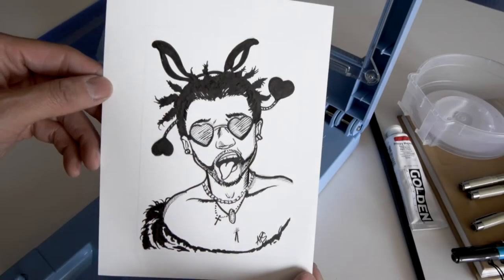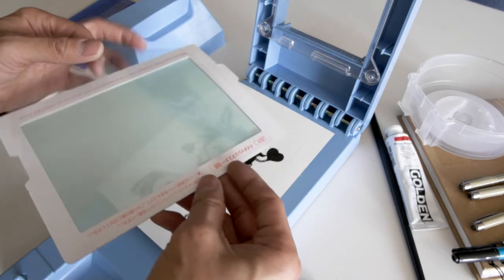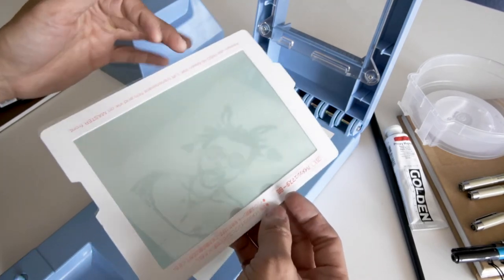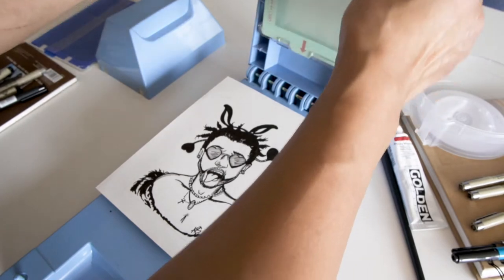Now we're going to go ahead and start the transfer with the Gocco print. Here I have the screen itself with one side with the flap. You want to put the flap side towards the outside.